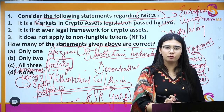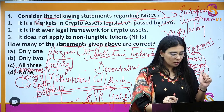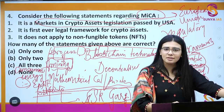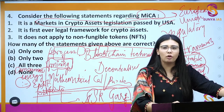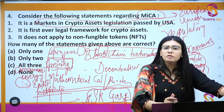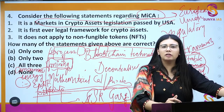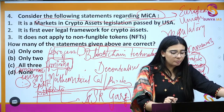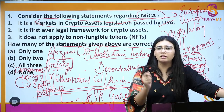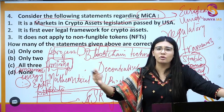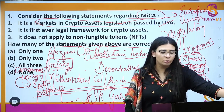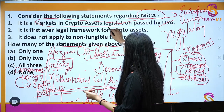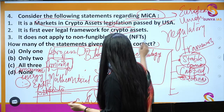Statement 2: MiCA is the first-ever legal framework for crypto assets — this is absolutely correct as nothing existed before. Statement 3: It does not apply to non-fungible tokens — this is absolutely correct; NFTs are excluded. Similarly, India's CBDC (digital currency) is also excluded from MiCA. Statement 1 is wrong, Statement 2 is correct, and Statement 3 is correct — so only two statements are correct.